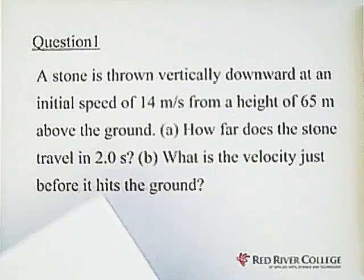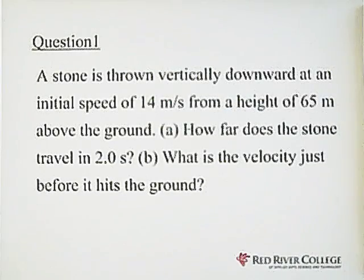Question 1. A stone is thrown vertically downward at an initial speed of 14 meter per second from a height of 65 meter above the ground. (a) How far does the stone travel in two seconds? (b) What is the velocity just before it hits the ground?